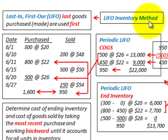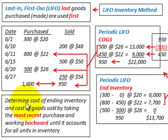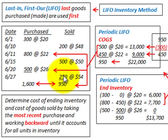Now let's look at the LIFO inventory method. LIFO stands for last in, first out — that's where the last goods purchased or made are used first. We'll first look at periodic LIFO using the same example. You determine cost of ending inventory and cost of goods sold by taking the most recent purchases and working backwards until you account for all units. We start with the 950 units sold, which will be accounted for through the most recent purchases of 500 units and the next most recent of 800 units.